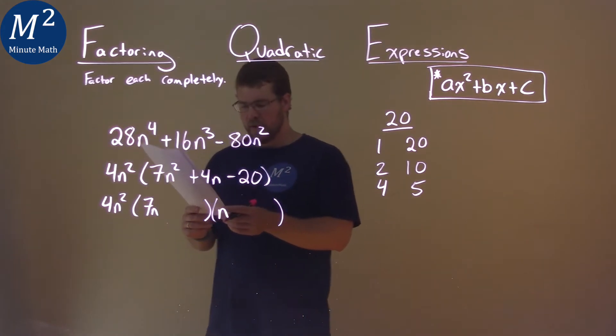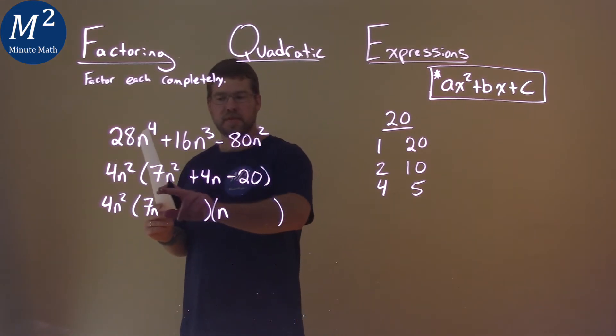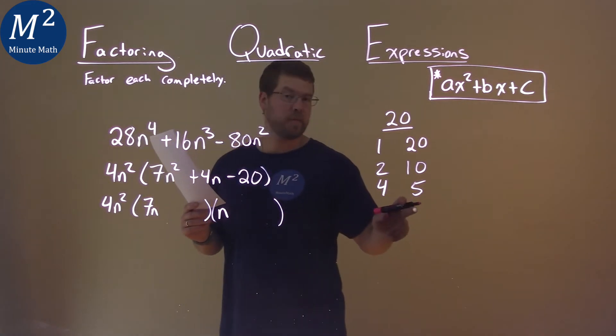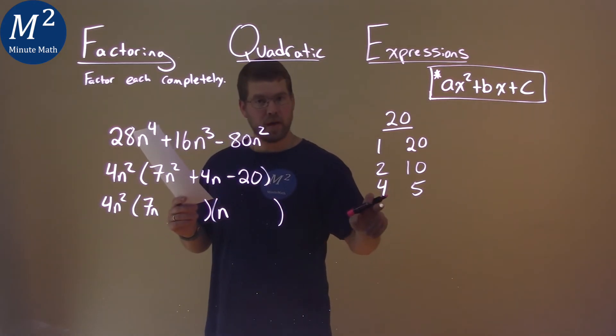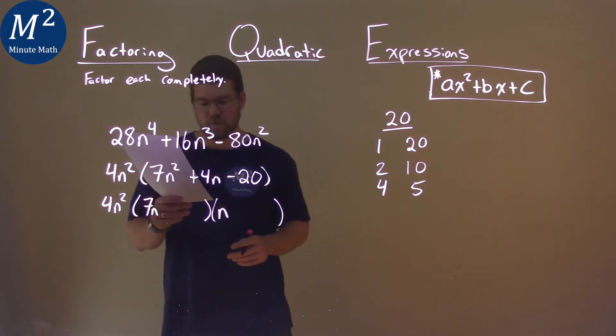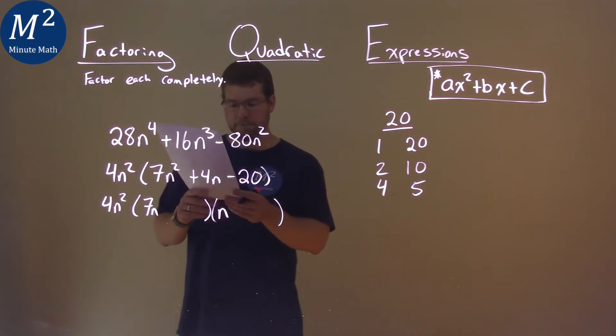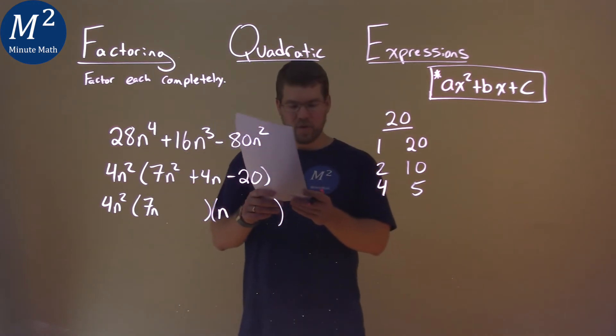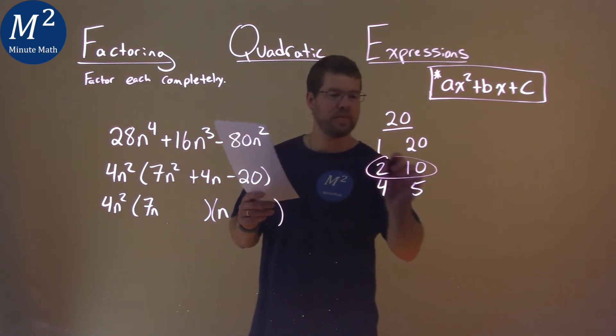So now we have to ask ourselves a question. 7 times which one of these numbers, and it could be positive or negative, plus its other pair, positive or negative, equals positive 4, that b value. And, well, the pair that I'm looking at here is the 2 and the 10.